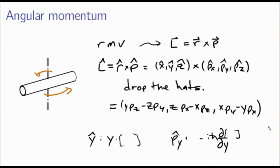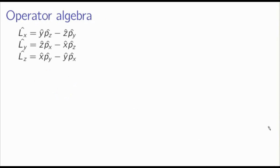So I said this was an operator algebra question. How can we analyze the algebraic structure of the angular momentum operators? There are going to be three of them — Lx, Ly, and Lz in Cartesian coordinates, since those are easiest to work with. The way to think about these in the operator algebra context is to think about commutators. Consider calculating the commutator of Lx and Ly.